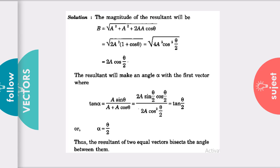So the resultant of two equal vectors bisects the angle between them. This is also a property you can learn. If there are two equal vectors, they will basically bisect the angle - it becomes an angular bisector, like in coordinate geometry.